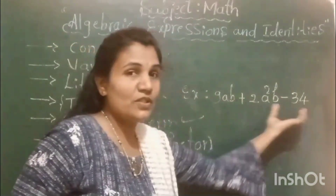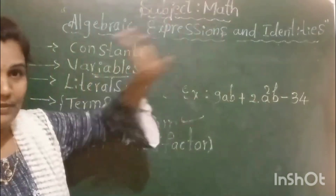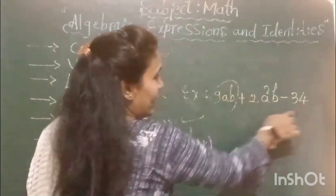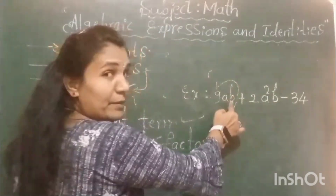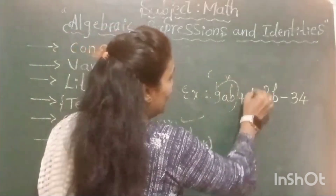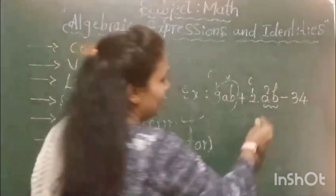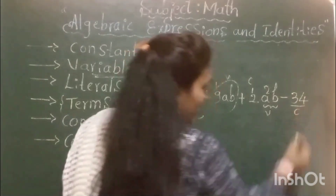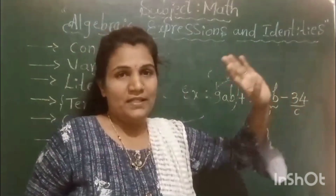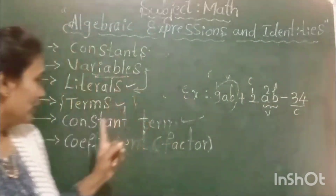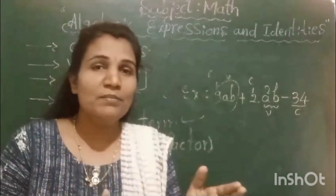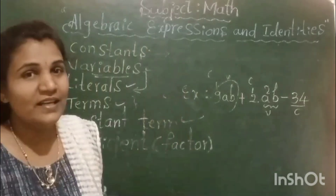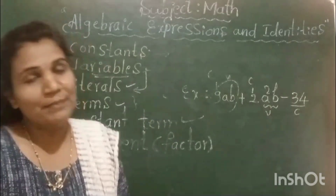In the term 9ab, 9 is a constant and ab are variables. In 2a²b, 2 is a constant and a²b are variables. Along with that, 34 here is a constant value with no variables — no literals — alongside it. So a constant term is a term of an expression which does not have a literal factor. That is called a constant term.